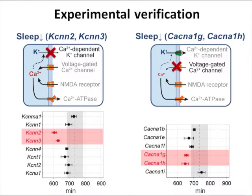First, we tested the effect of knocking out the calcium-dependent potassium channel and the voltage-gated calcium channel, both of which we predicted would result in reduced sleep duration. Just as predicted, these mice showed a significant decrease in sleep duration in comparison to mice that had not been genetically engineered.